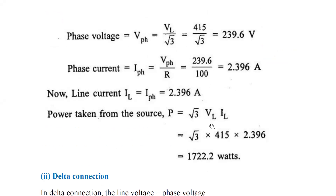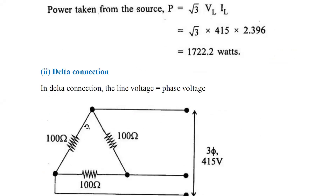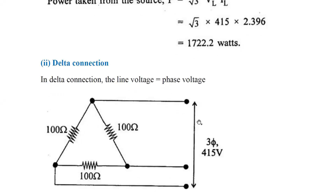Similarly, now for the delta connection. Draw the delta circuit with 100 ohms on each branch and the 450 volt 3-phase supply across it. In delta connection, line voltage is equal to phase voltage. Phase voltage equals line voltage, which is 450 volts as given in the problem.